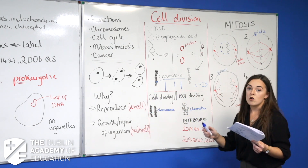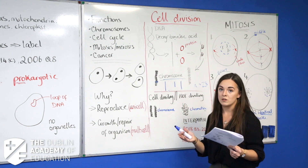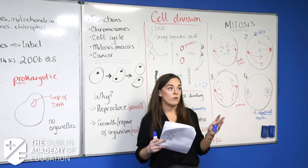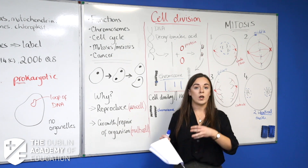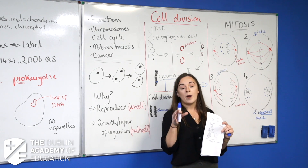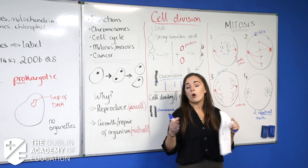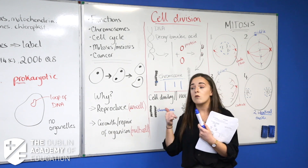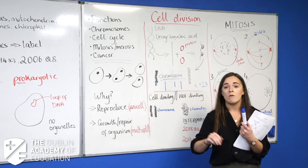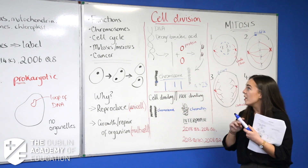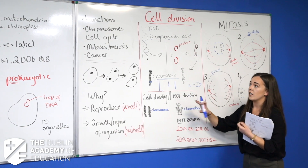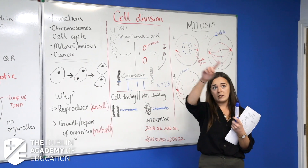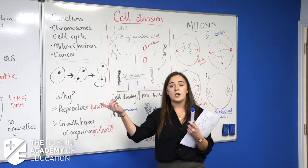What we're getting into now is the cell cycle, mitosis, and meiosis — really popular topics that come up every year, usually as a 20-mark short question or as part of a long question worth 24–27 marks. The cell cycle is about what a cell does in its lifetime. A cell is either dividing — going through mitosis or meiosis — or it's not dividing.